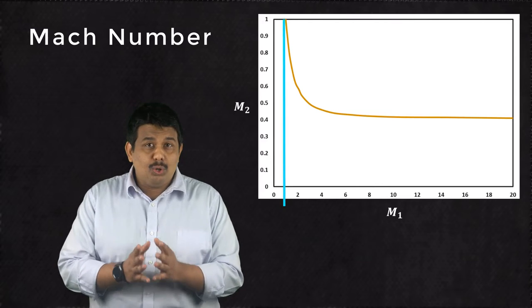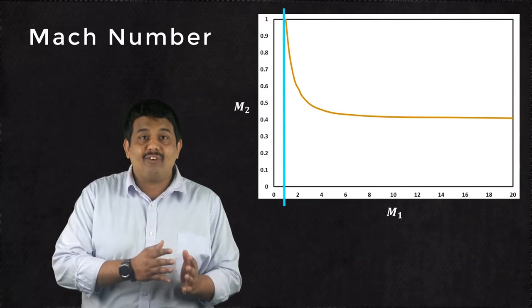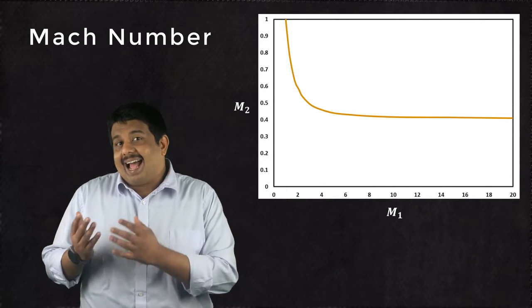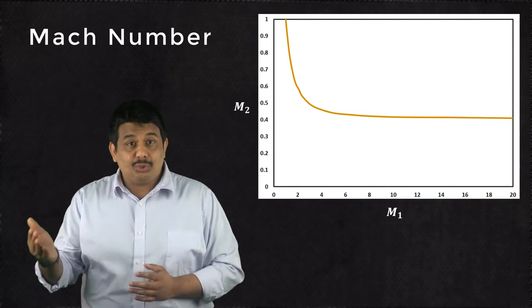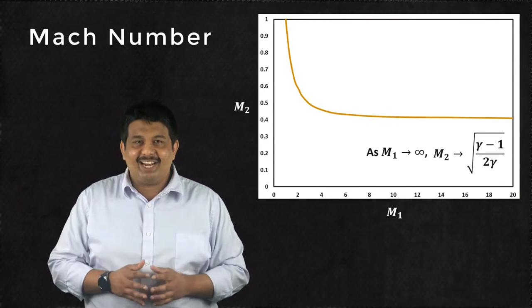It is important to note that M1 is always supersonic. That is, M1 is greater than 1. As the upstream Mach number tends to infinity, M2 approaches a constant finite value.